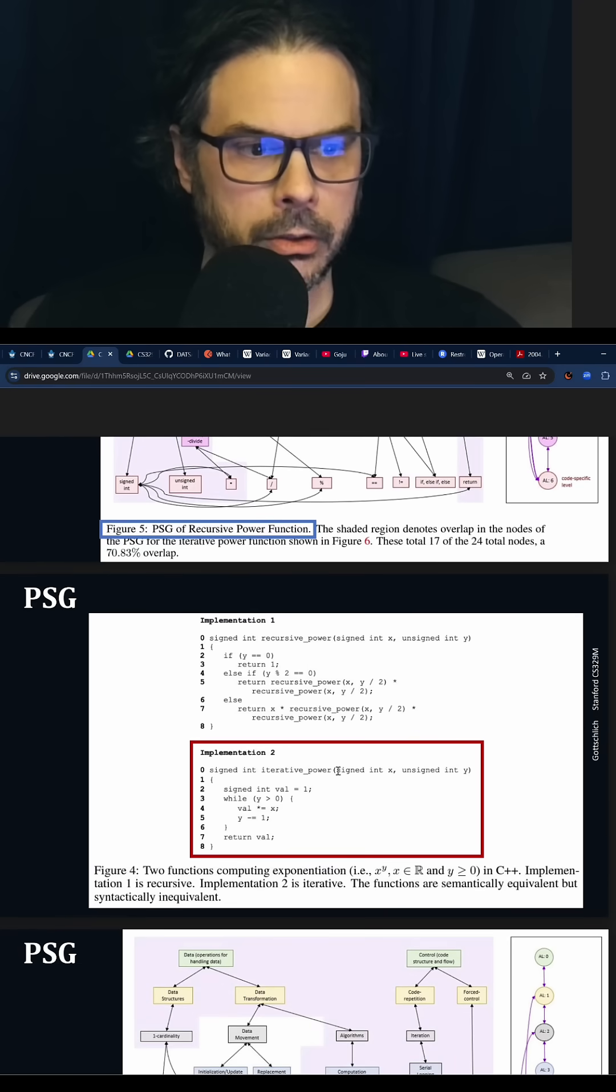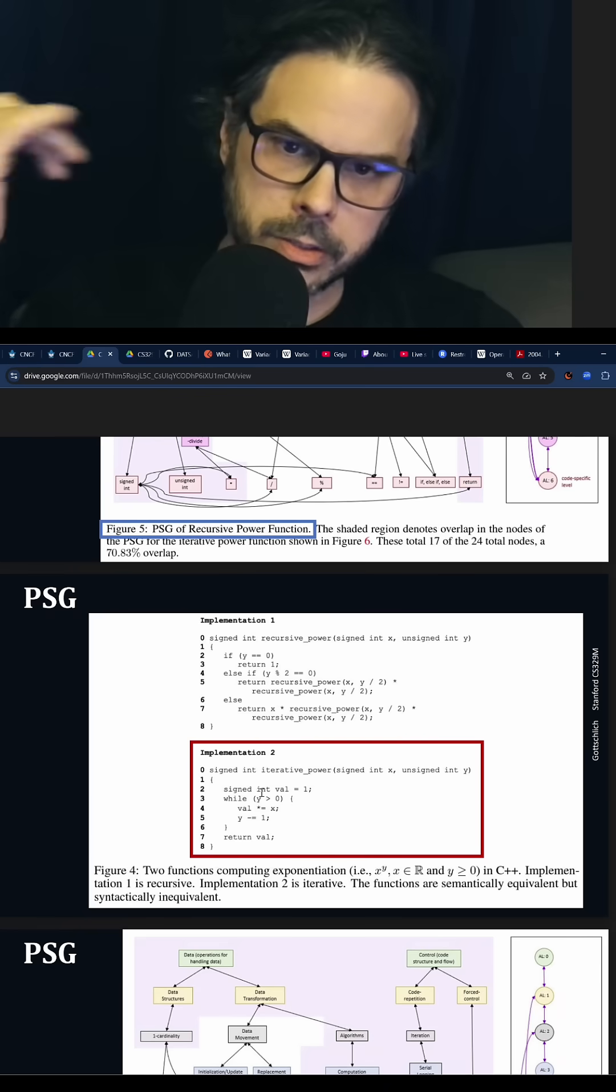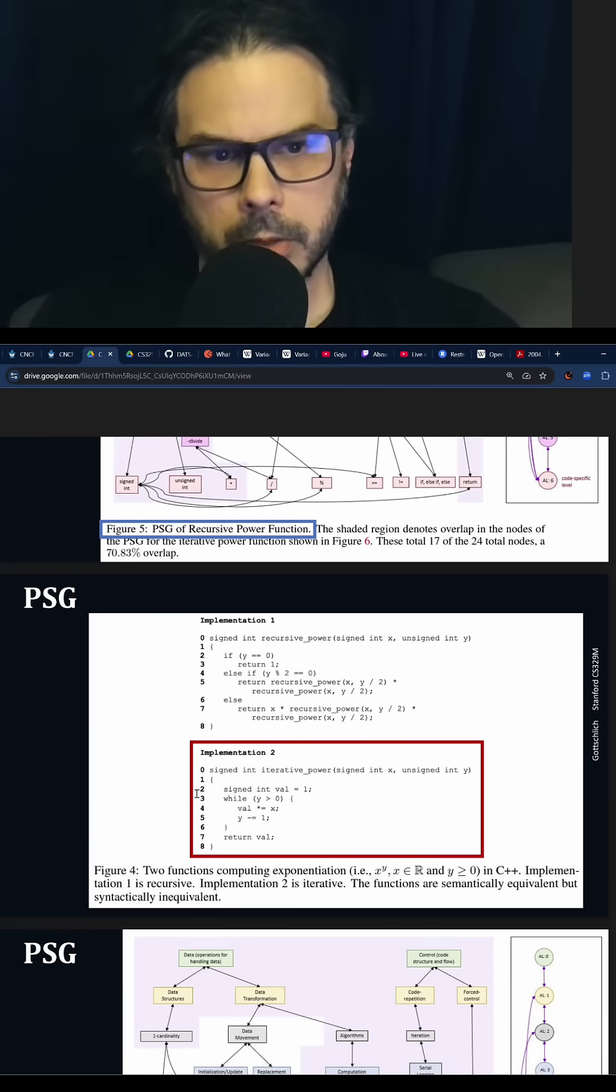What does the iterative version look like? You've got to keep track of things like, okay, this is the second to last. Move that forward. So there's more bookkeeping, for example.